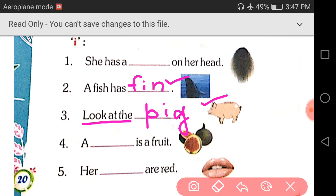Number four. A dash is a fruit. What is it? A fig. F-I-G, fig. A fig is a fruit.